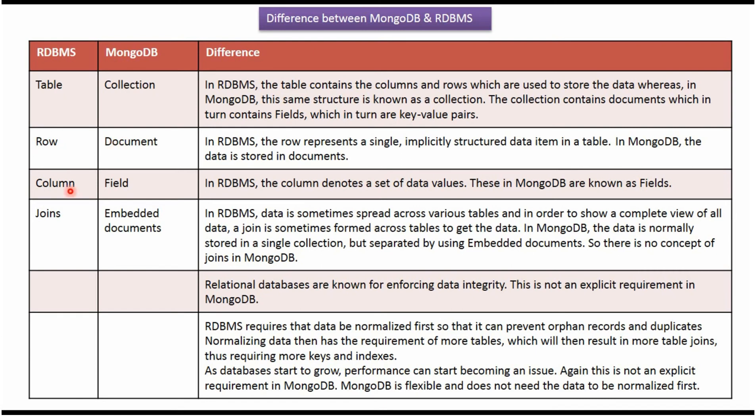In RDBMS, the column denotes a set of data values. The equivalent to a column in MongoDB is a field.